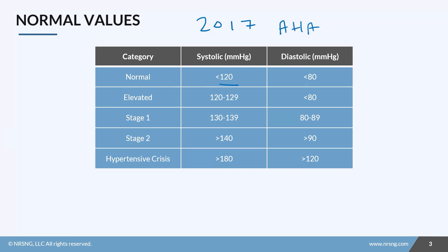Normal blood pressure is less than 120 over less than 80. If your systolic goes above 120, you're considered to have elevated blood pressure. Stage one is 130–139 over 80–89. Stage two is over 140 over 90. And hypertensive crisis begins when systolic gets above 180 and/or diastolic gets above 120.